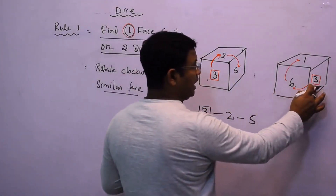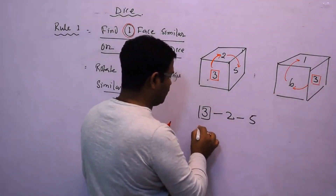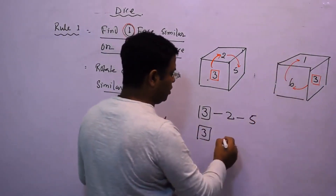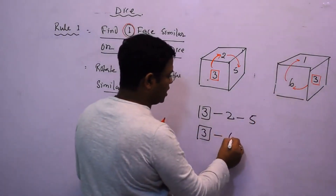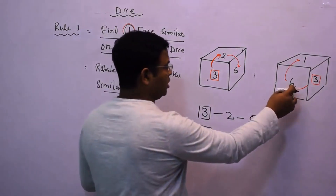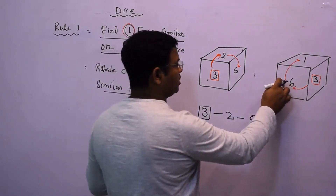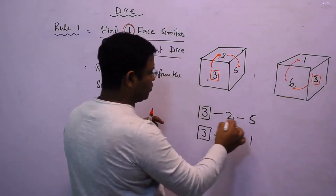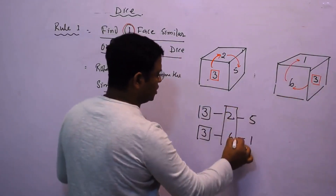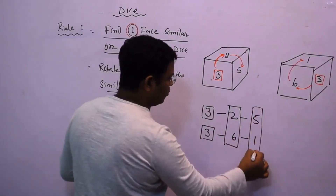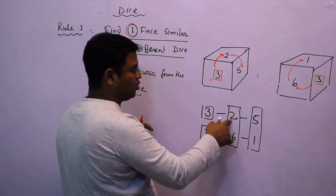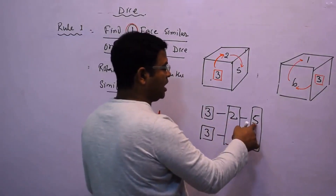Then I come to the second dice, take 3 again as the similar face, rotate clockwise — after 3 comes 6, and after 6 comes 1. This way we have arranged the numbers and made a rectangular box, so 2 is opposite to 6 and 6 is opposite to 2.